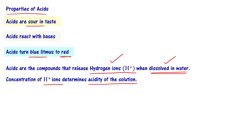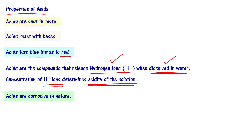The concentration of H+ ions in the solution is very important — that defines the acidity of the solution. Acids are also corrosive in nature. For example, if you pour some acid like HCl on iron, it is going to degrade that; some amount of iron is eaten up by the reaction between HCl and iron.